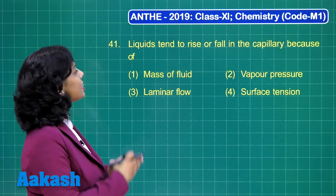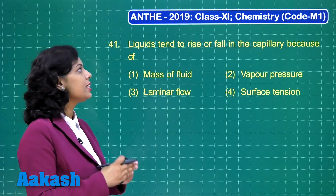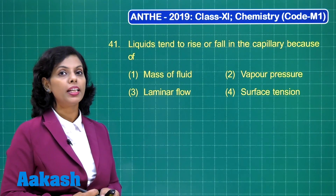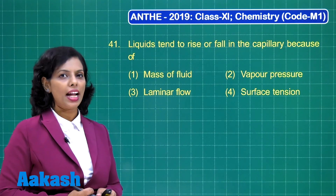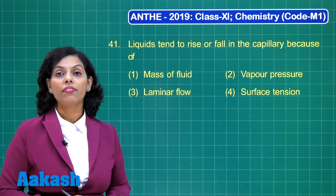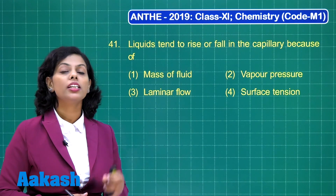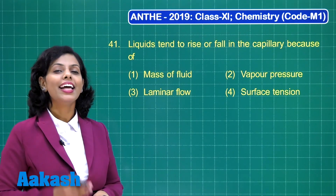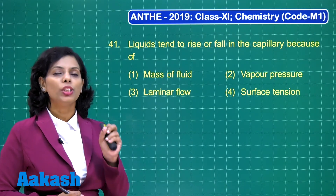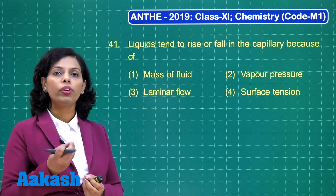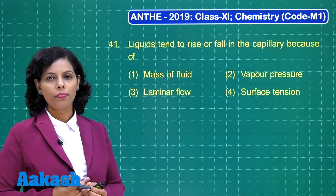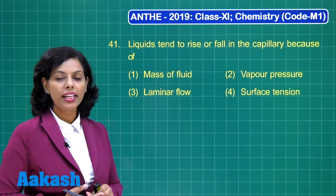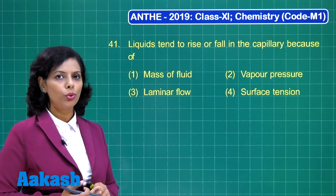Have a look at that. Liquids tend to rise or fall in a capillary because of capillary action, which is an application of surface tension. Surface tension is basically the force acting on the unit length of the surface of a liquid, and it is the reason why a liquid always wants to occupy a minimum surface area. That is why a water droplet is spherical in nature, and similarly, capillary action is also due to surface tension.